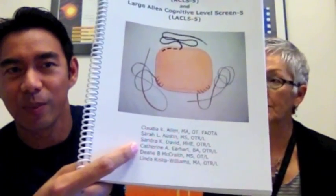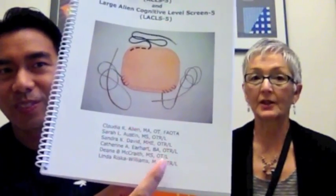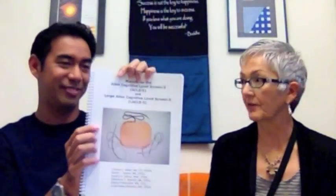The scores that you get out of doing this screen need to be interpreted in light of the Cognitive Disabilities Model. It's important to understand what this score means and what it tells you. You also need to administer this tool according to the standardized methods, which are contained in the fifth version of the manual, published in 2007. Claudia Allen is one of the five authors on this manual.